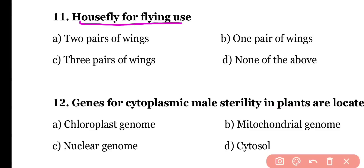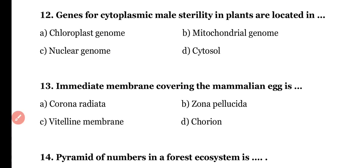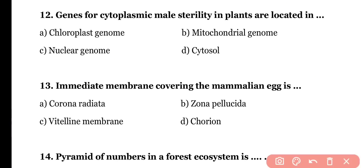Question number eleven: a housefly for flying uses (a) two pairs of wings, (b) one pair of wings, (c) three pairs of wings, or (d) none of the above. The correct answer is option A — a housefly uses two pairs of wings.